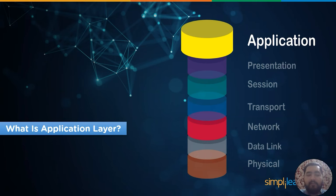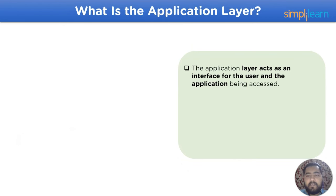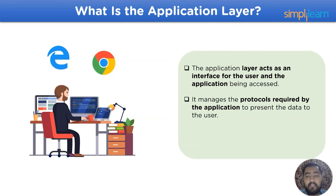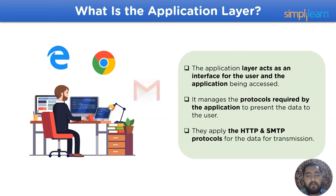Now let's move on to the main heading for the session: what is an application layer? The application layer acts as an interface for the user and the application being accessed. It manages the protocols required by the application to present the data to the user, applying HTTP, SMTP, and similar protocols for data transmission over the network channel.